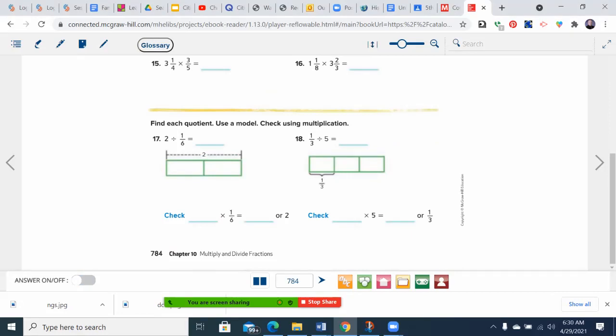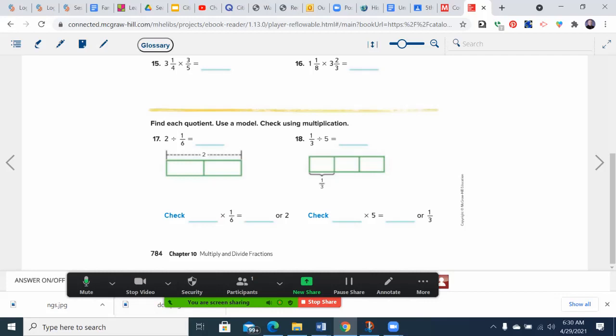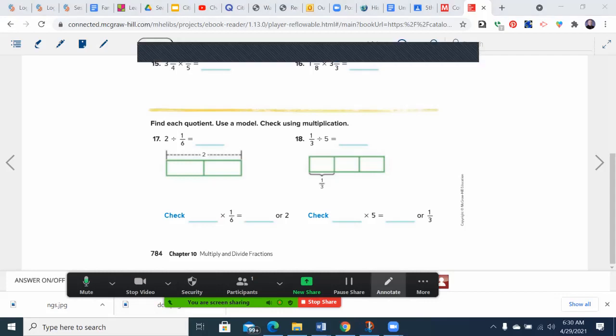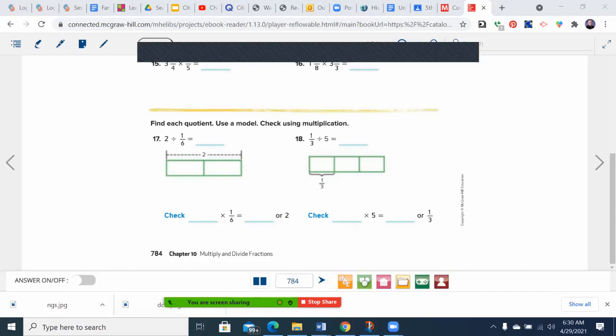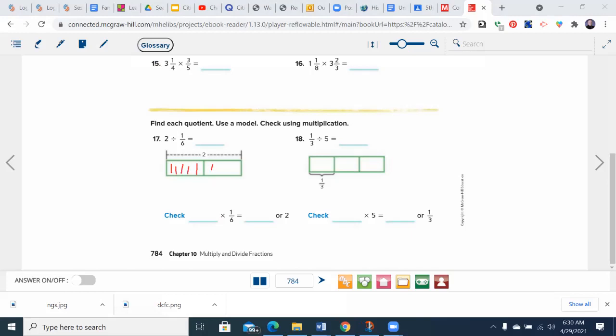Find each quotient. Check using multiplication. In all honesty, it's something you should be doing in your head normally, but this is something you can do to check. So 2 divided by 1 sixth. How many times will 1 sixth go into 2? Twelve. Another way to do this, if you want to be quick, is the KFC method, where I go 2 times 6. There's ones under both, so that washes out. 12 over 1 is 12.